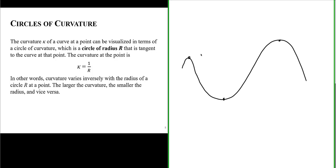If we take a circle right at this point here, notice that circle is a circle of radius r tangent to that point describing that point. So that point has a curvature that is inversely proportional to the radius at that point. Let's label this point one. So the curvature at point one is equal to the reciprocal of the radius at that point.